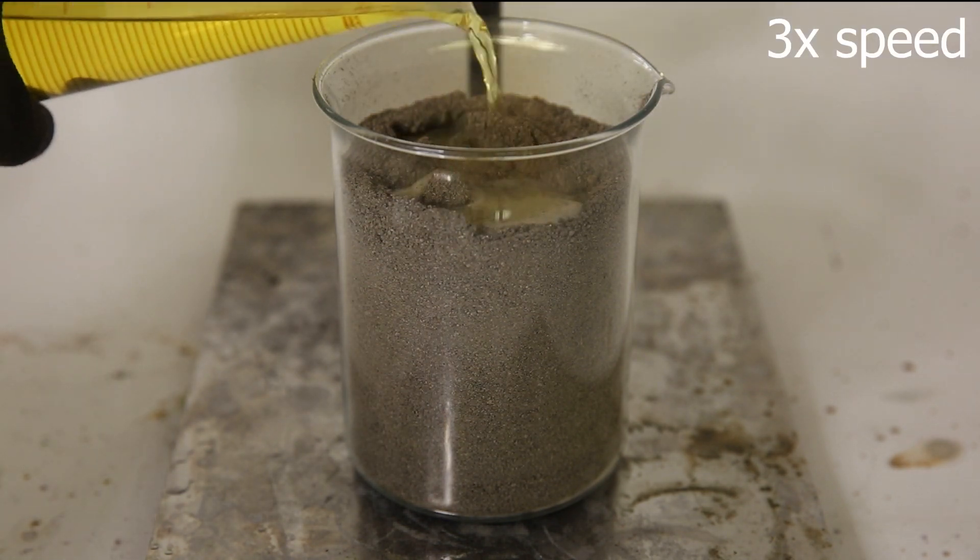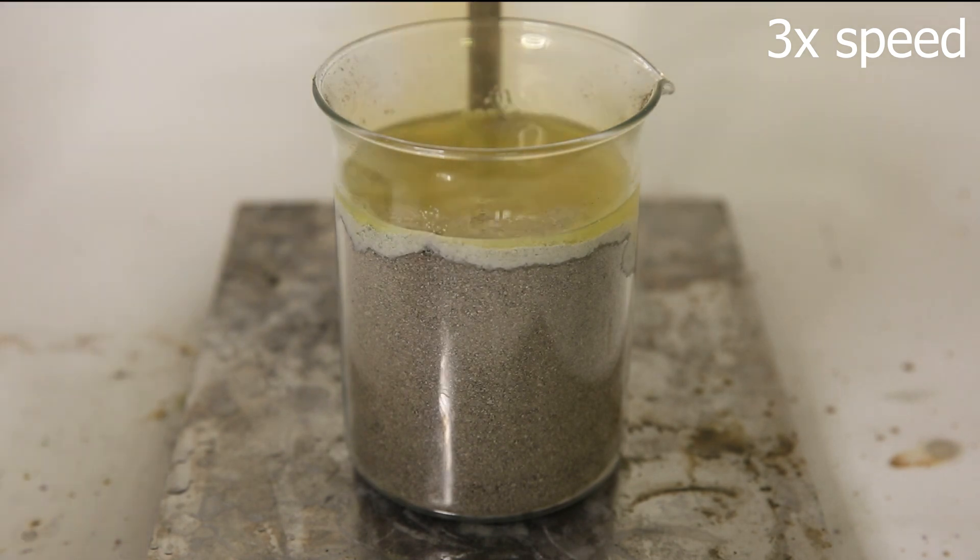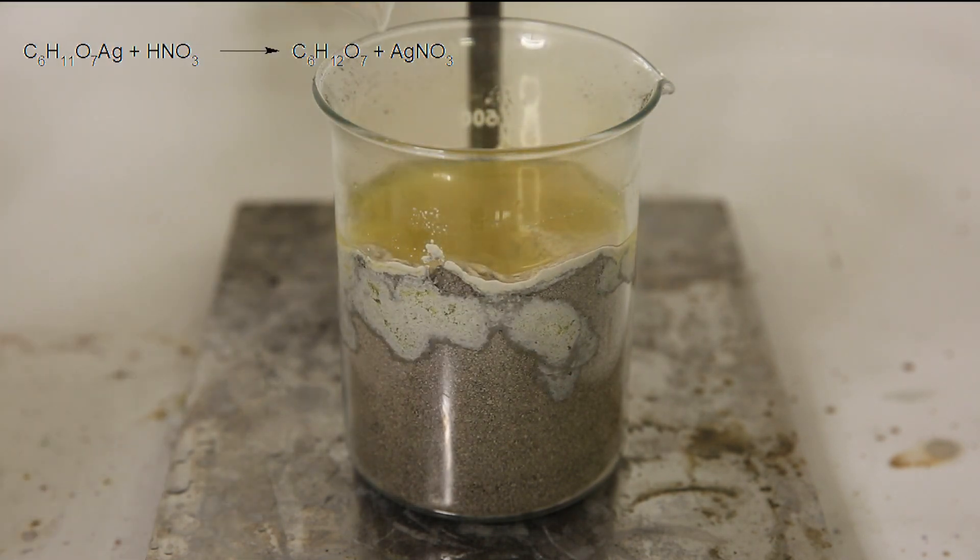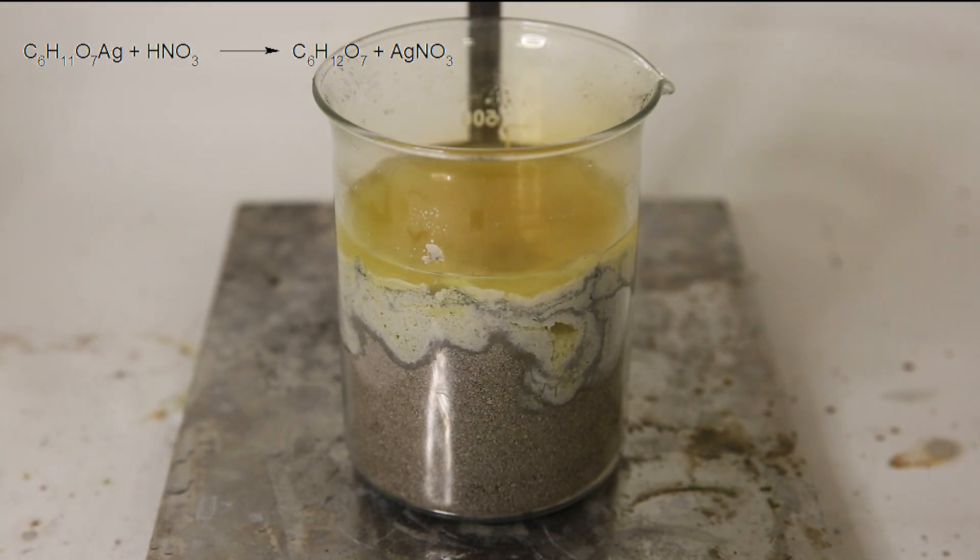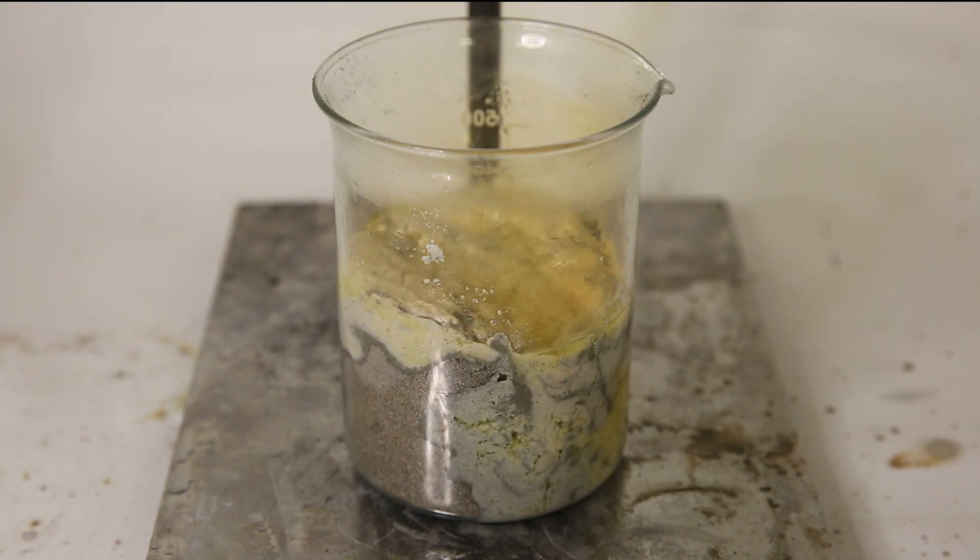So to the powder, I add about 100 milliliters of 90% nitric acid. We can instantly see the powder basically melt away and see the formation of the silver nitrate and gluconic acid. Part of it dissolves and the undissolved part we see as the white stuff.